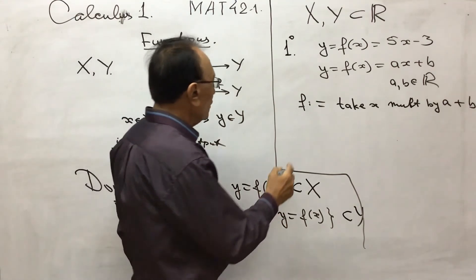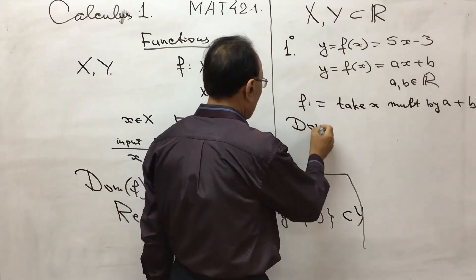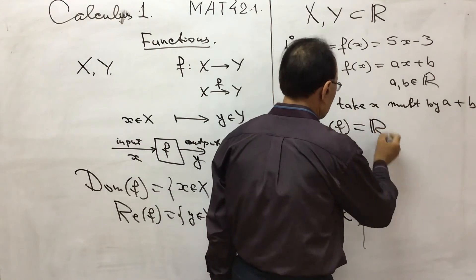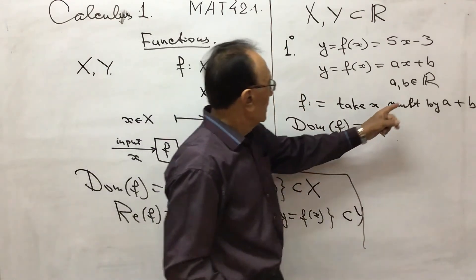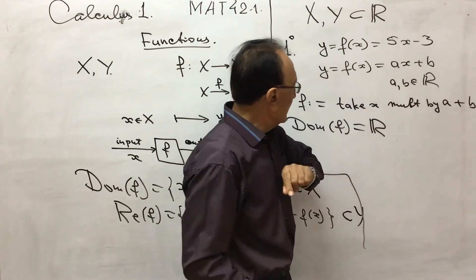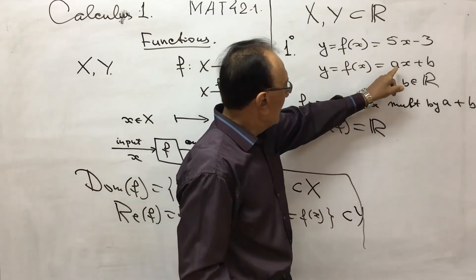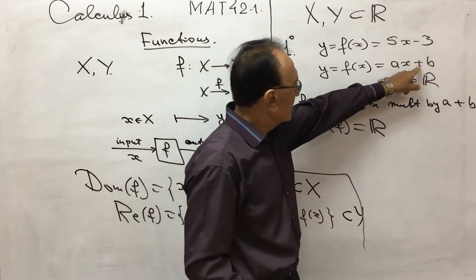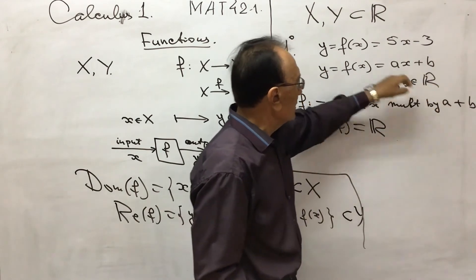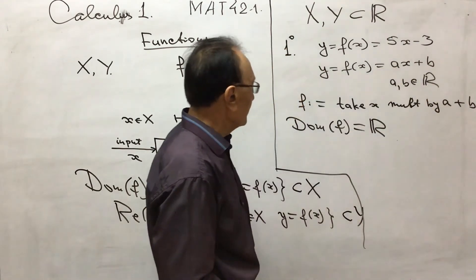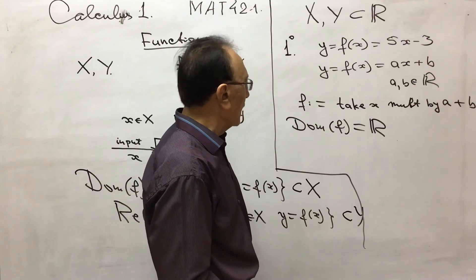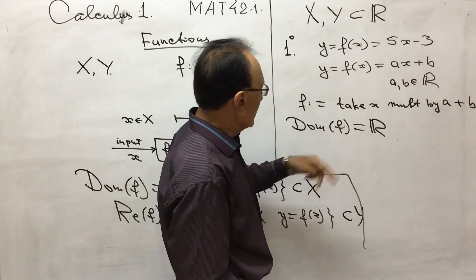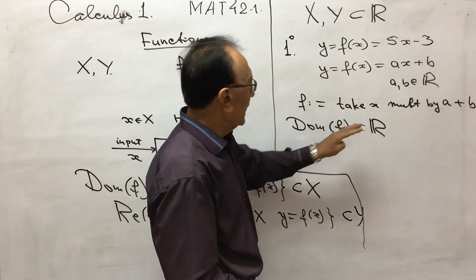So how about domain? Domain of f is R in this case. Why? Because if you take any element of R, you can multiply by a, also is element of R. You can add to this real number, another real number, so result is a real number. So domain is R, so that means we can apply that rule f for any x from R.